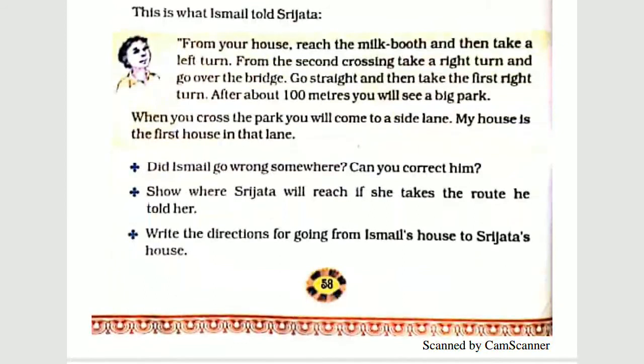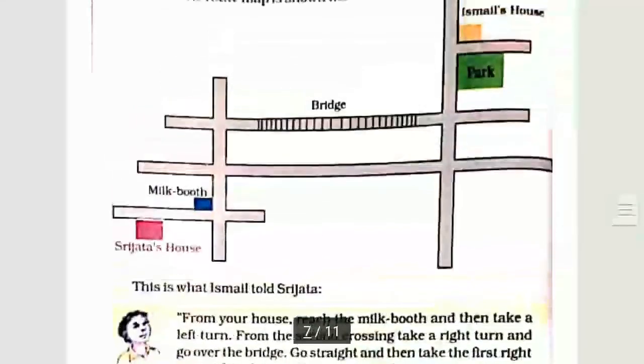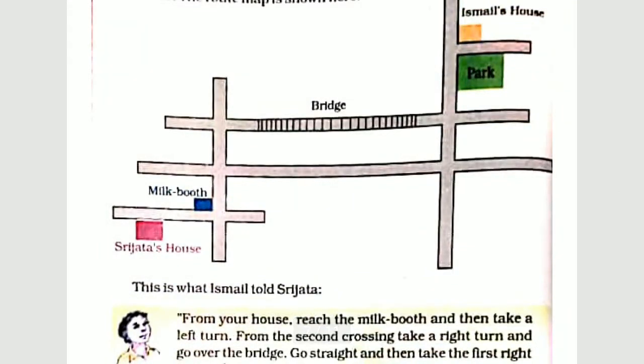Show where Shri Jata will reach if she follows the route Ismael told her. If Shri Jata follows the incorrect directions, she will reach the direction opposite to Ismael's house.